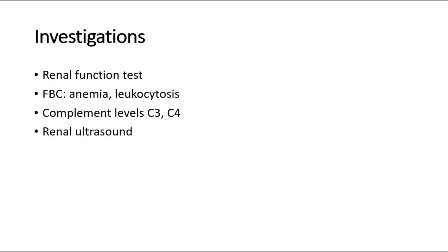Other investigations include renal function tests to check blood urea, electrolytes, and serum creatinine. We expect to see anemia, mainly due to dilutional anemia, and leukocytosis may also be present. Complement levels such as C3 will be low at the onset of symptoms and usually normalize by 6 weeks. C4 is usually normal. A renal ultrasound can also be done, but if the patient has a clear-cut acute nephritic syndrome, it is not necessary.